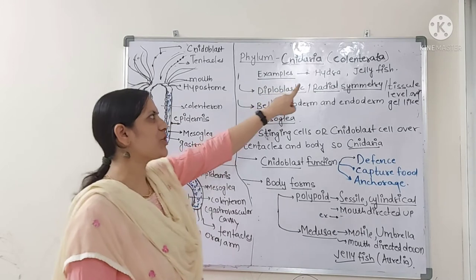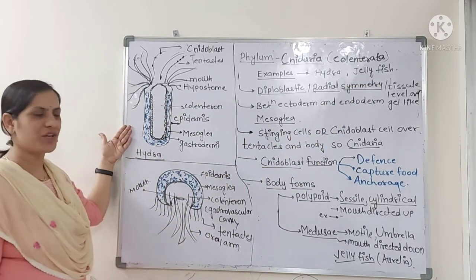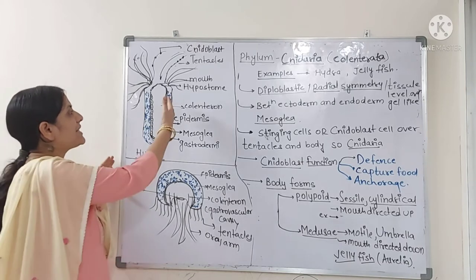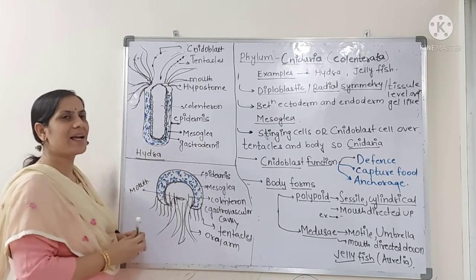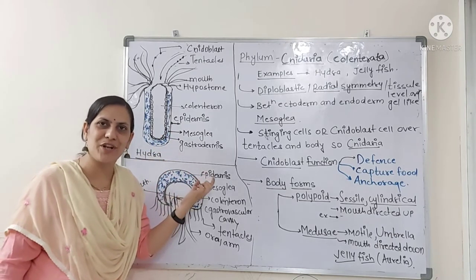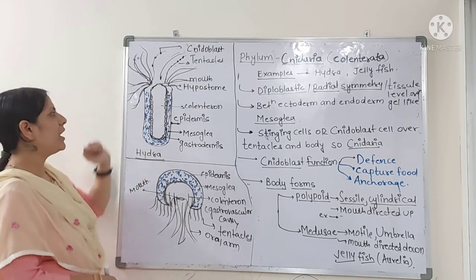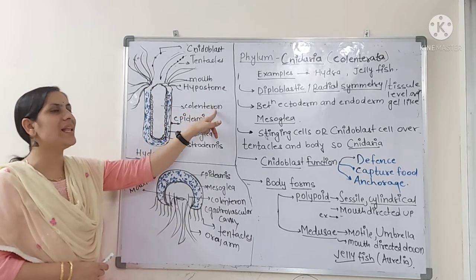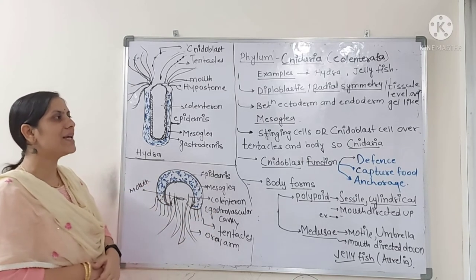Cnidarians are available in two different body forms. One example is hydra and another is jellyfish. Hydra is having two tissue layers: the outer one called epidermis and the inner one called gastrodermis. In between these two layers there is a gel-like undifferentiated mass known as mesoglea. Exactly in the center of the body of hydra there is one cavity known as coelenteron or gastrovascular cavity.